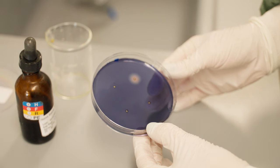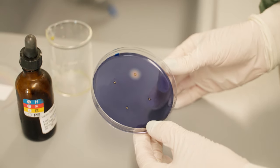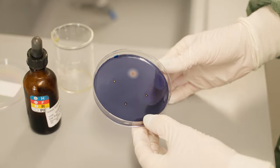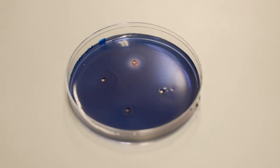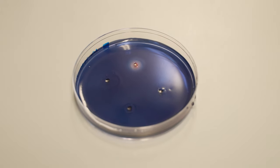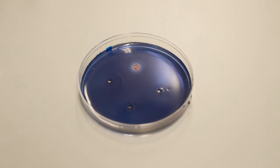A positive sample is when the ring size is equal or greater in size than the positive control. If the ring is less than the positive control but greater than the negative control, it is inconclusive. A negative result would be the absence of any clear ring.